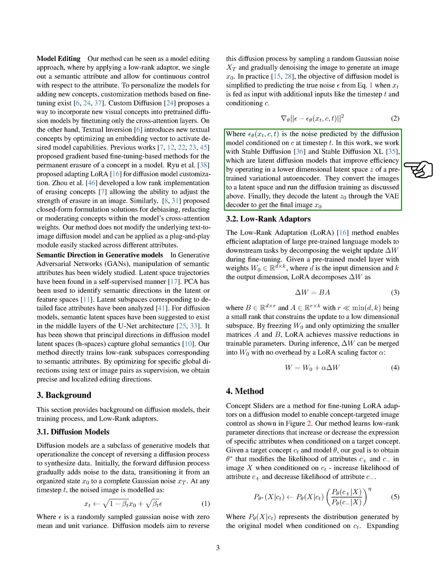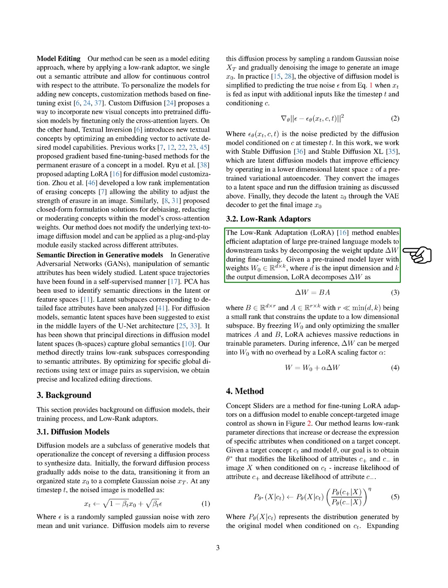They convert images to a latent space and run the diffusion training as discussed above. The low-rank adaptation (LoRA) method allows for efficient adaptation of large pre-trained language models to downstream tasks by breaking down the weight update during fine-tuning. Given a pre-trained model layer with weights where the input dimension is D and the output dimension is K, LoRA breaks down the weight update into smaller matrices. By freezing the original weights and only optimizing the smaller matrices, LoRA achieves significant reductions in trainable parameters.